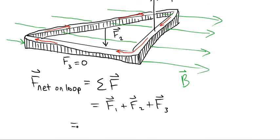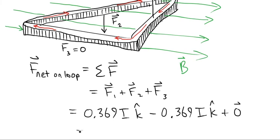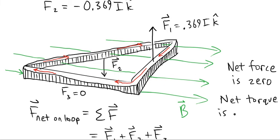But the sum of the forces is simply going to be F1 plus F2 plus F3, and that's going to be positive 0.369 I minus 0.369 I, and it all adds up to zero. So even though the net force on this loop is zero, it's important to note that the net torque on it is not zero.